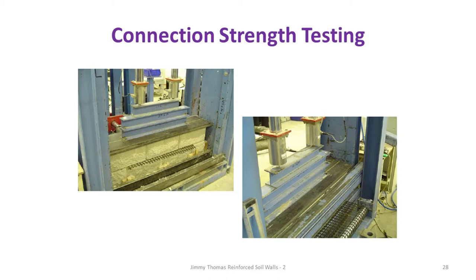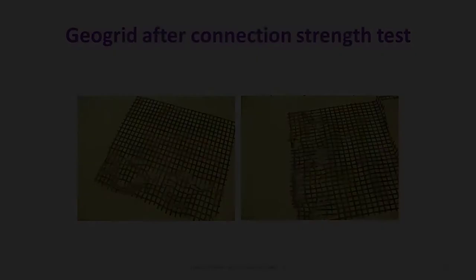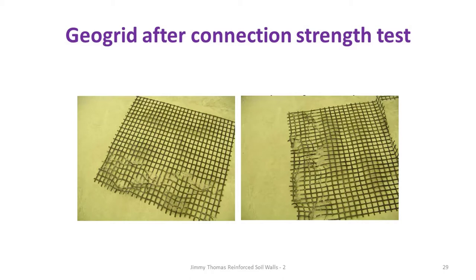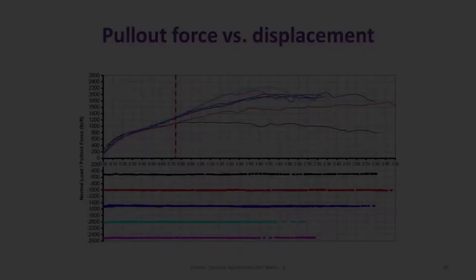This shows another test arrangement — this is the front side, the pulling is from this side. The type of clamping arrangement affects the results. The vertical load is applied with hydraulic jacks. After the test, you can see how the geogrid looks — it literally just tears, and you can see the damage.